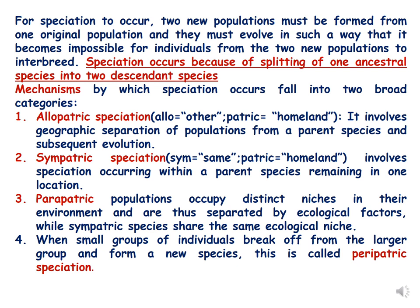These two broad categories are allopatric speciation and sympatric speciation. Allopatric speciation involves geographical isolation so that the two separated populations are isolated by a geographical barrier, and that is why they are not able to interbreed because reproductive isolation develops over the course of time. Allo means 'other' and patric means 'homeland.' Allopatric speciation involves geographic separation of populations from a parent species and subsequent evolution.